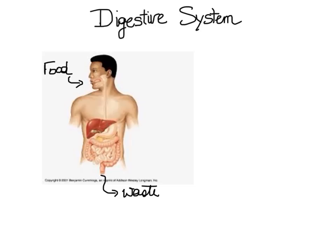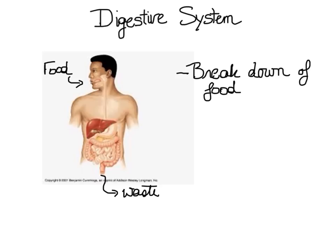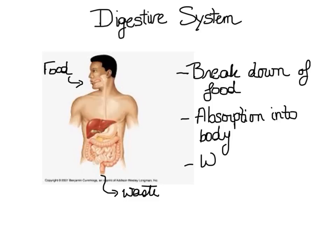Please pause the video and brainstorm what those changes might mean. There are many different answers to that question. The way I think about the overall function of the digestive system is that food is initially broken down both through mechanical means and chemical means to release small molecules that can be readily absorbed into the body. And then finally, waste which remains within the lumen of the digestive tract must be eliminated.